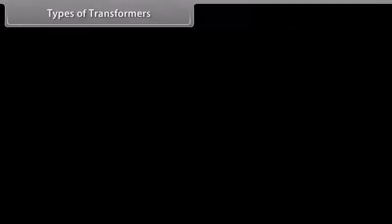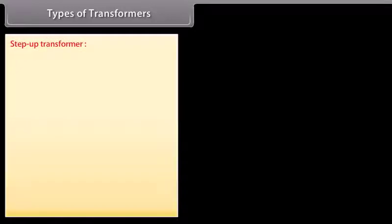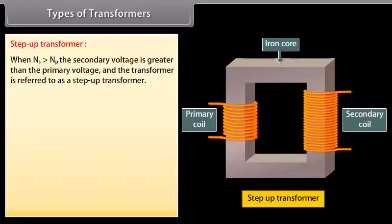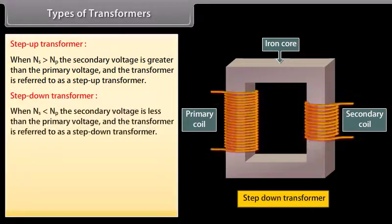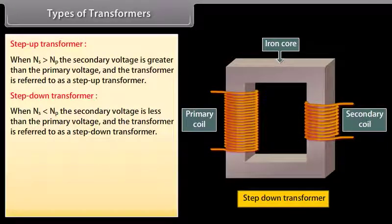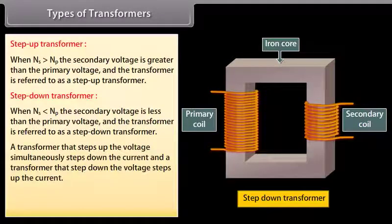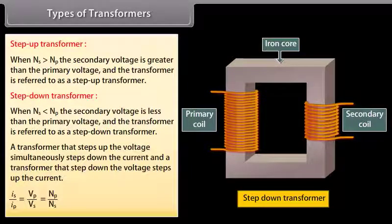Types of transformers: Step-up transformer — when the secondary voltage is greater than the primary voltage. Step-down transformer — when the secondary voltage is less than the primary voltage. A transformer that steps up voltage simultaneously steps down current, and vice versa: IS/IP = VP/VS = NP/NS.